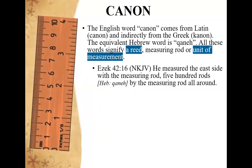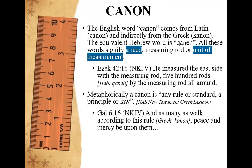We talk about the word 'canon.' The word canon — we're not talking about the one that you shoot at people, that's got two N's. This comes from a Latin word and indirectly from the Greek, and basically it comes from a word that means a ruler or a reed, so you're talking about a measurement. You can see where that word is actually used — the equivalent word in Hebrew in Ezekiel, talking about a measurement. So when we talk about the canon of Scripture, we're talking about a book where a rule has been applied to see if it measures up to certain criteria and whether we believe it's inspired Scripture or not.